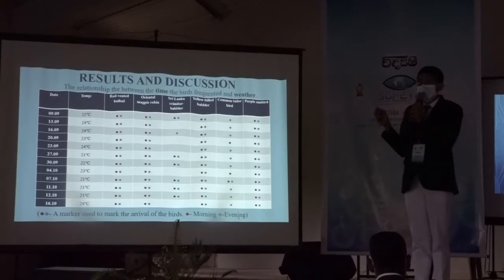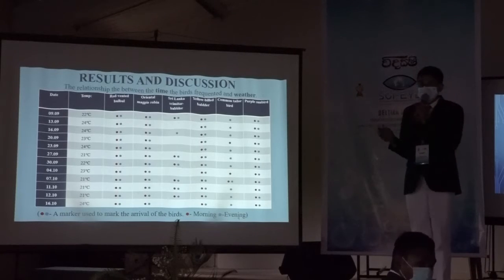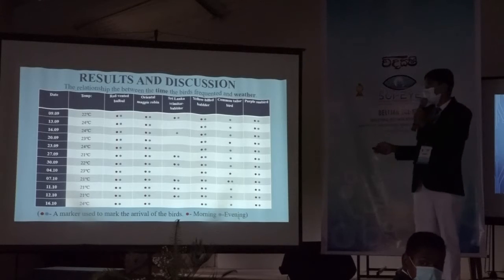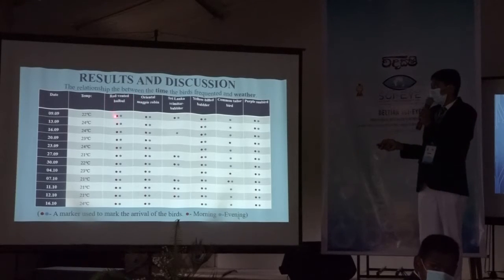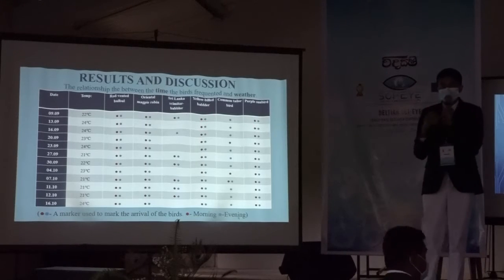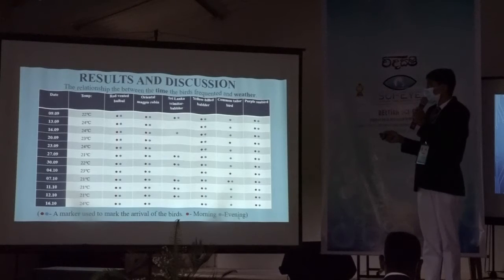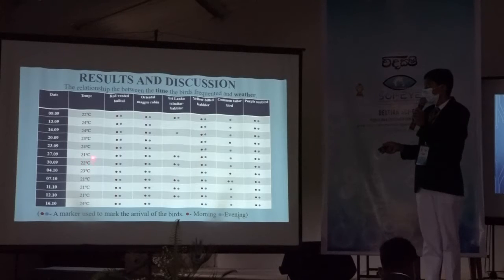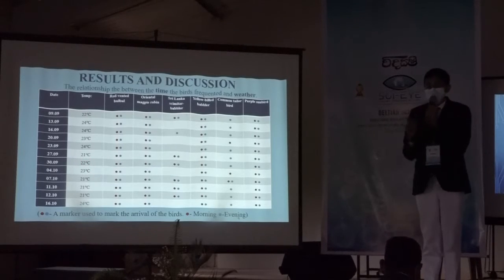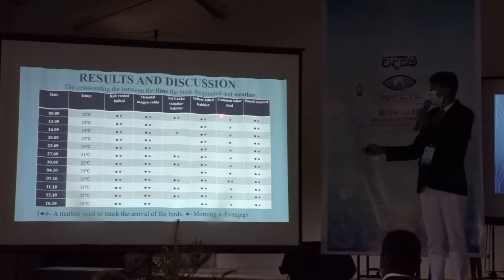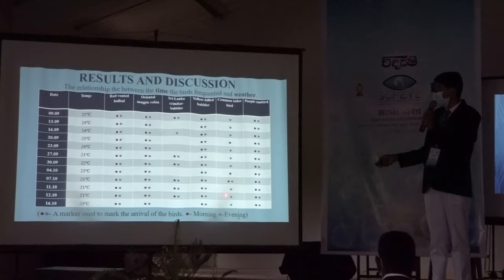This chart shows the relationship between time and weather for each bird. Overall, they did not show a direct relationship between time and weather. However, Swirlangas and Himidberg can be seen at relatively low temperatures during the day. The common tailor bird can be seen in the evening time of the day, shown by the light blue color dot.